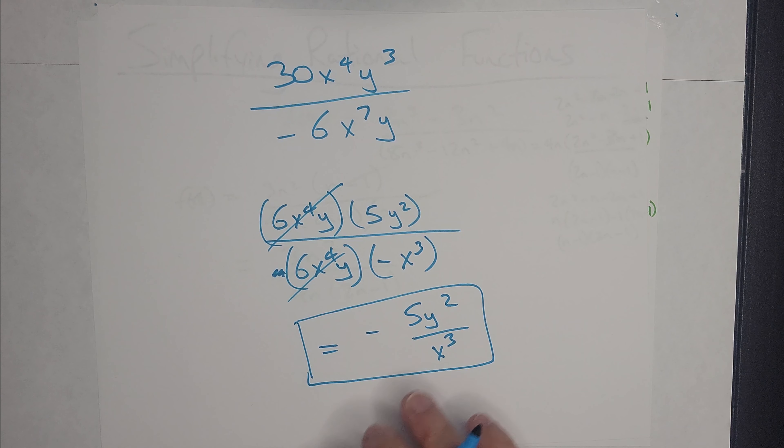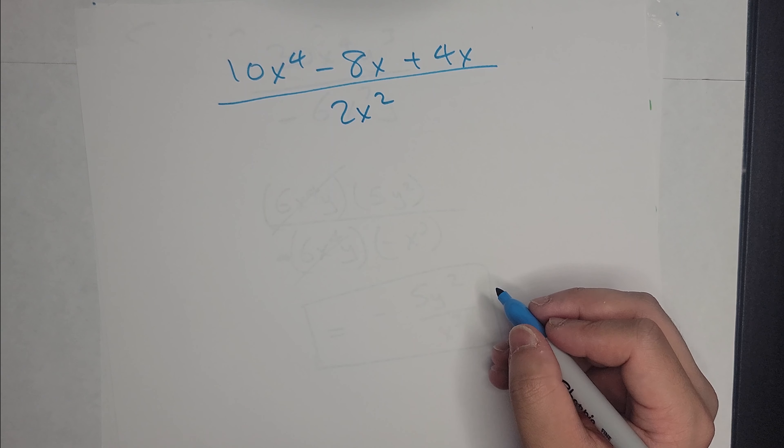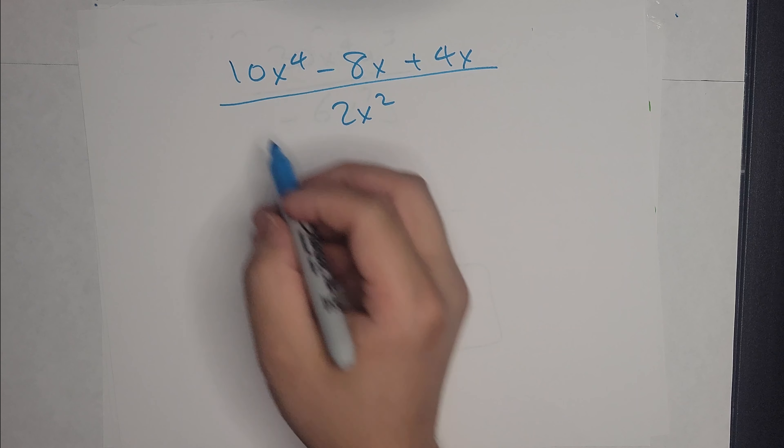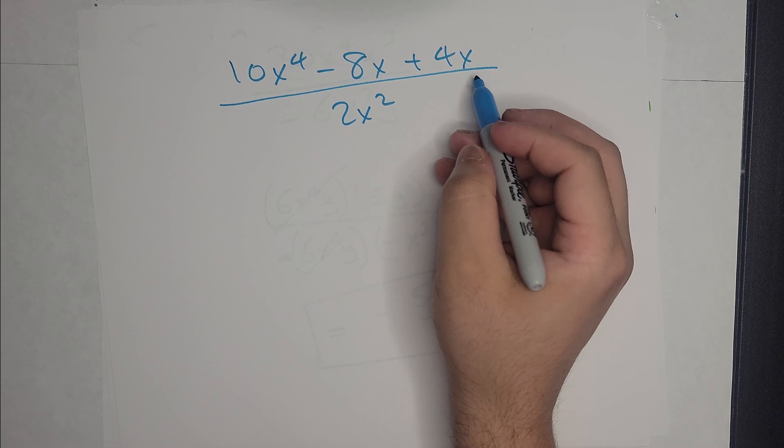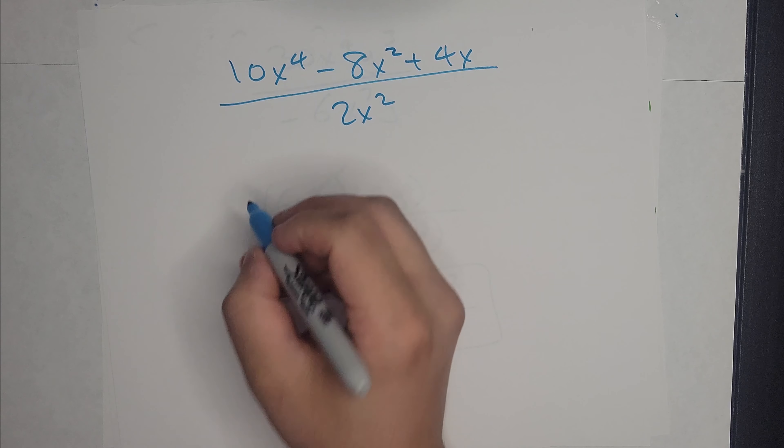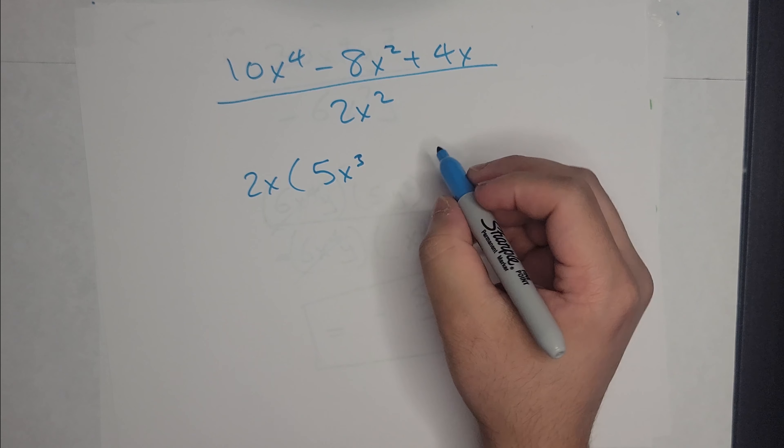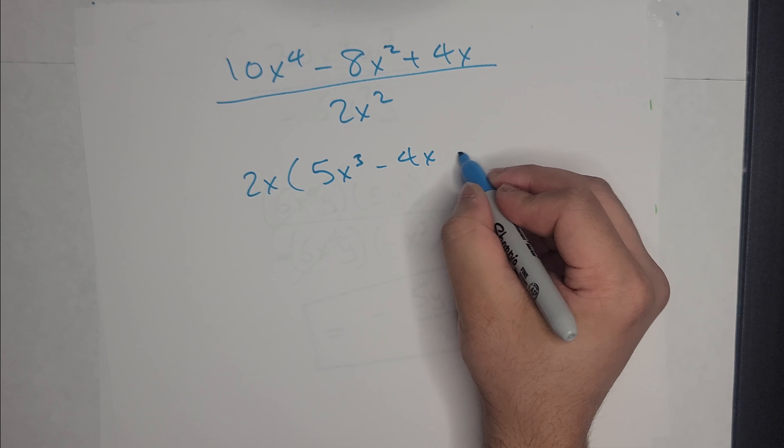Let's do another one. Let's do f(x) = (10x⁴ - 8x⁴x)/(2x²). So what's one of the first things I can take out? I know I can factor out 2 and x from the numerator. Oh, that's a squared. Sorry. So I'm left with 5x³ and then minus 4x + 2.